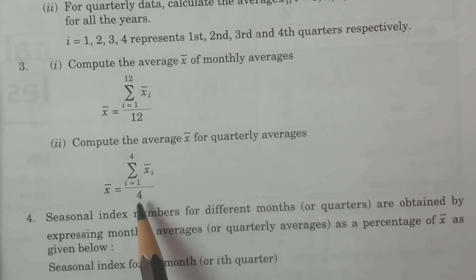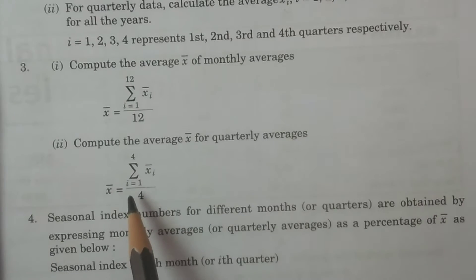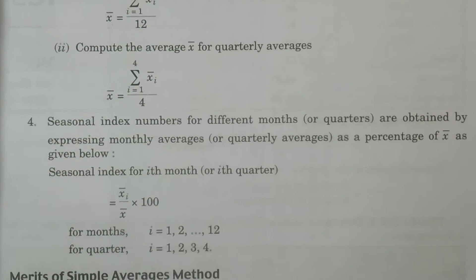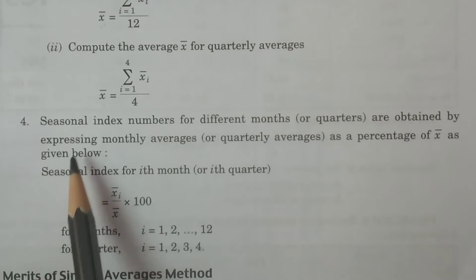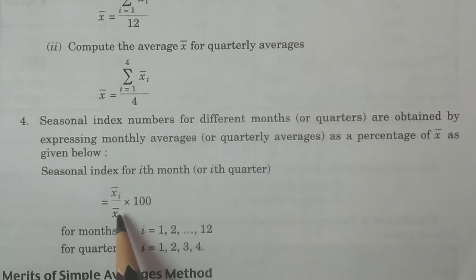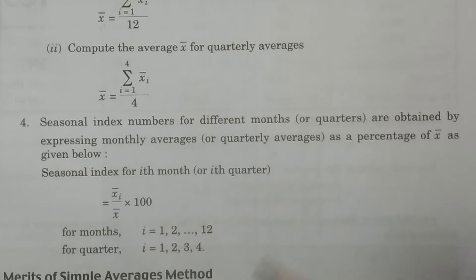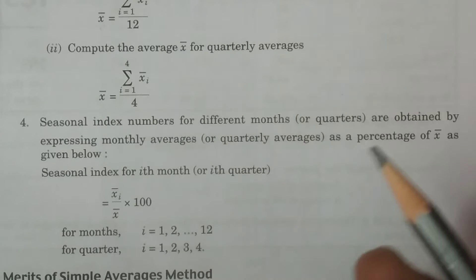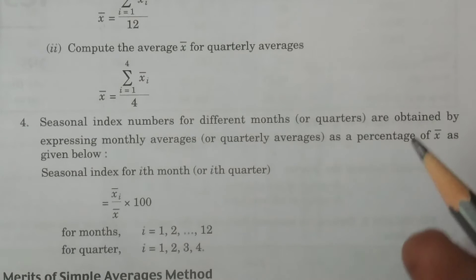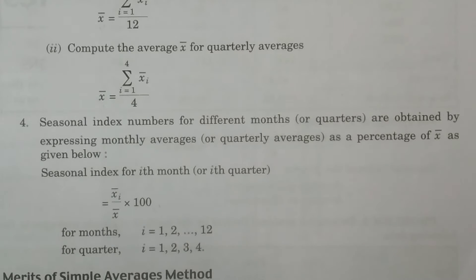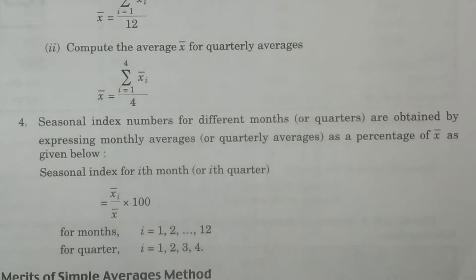Then the seasonal indices are calculated using the formula: Seasonal Index = (x̄ᵢ / x̄) × 100. This formula holds for both monthly and quarterly data. For the i-th month or i-th quarter, divide x̄ᵢ by the overall average x̄ and multiply by 100.